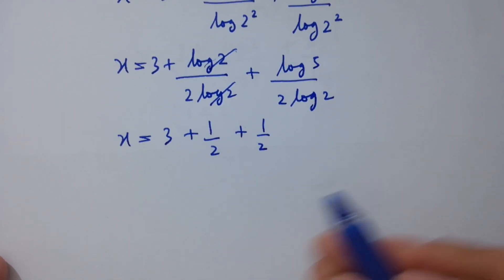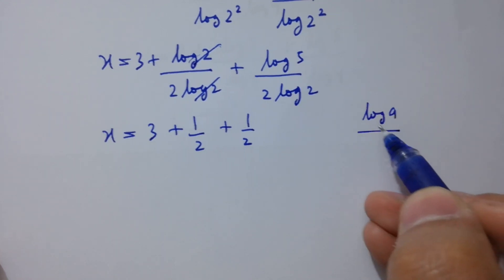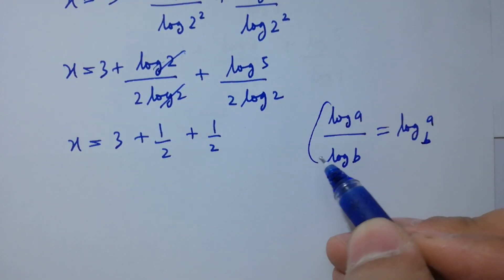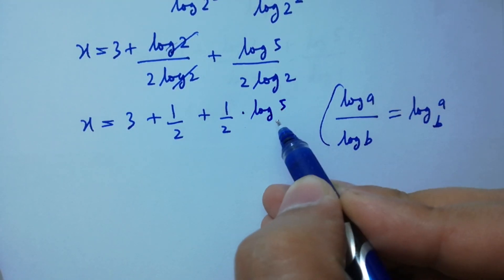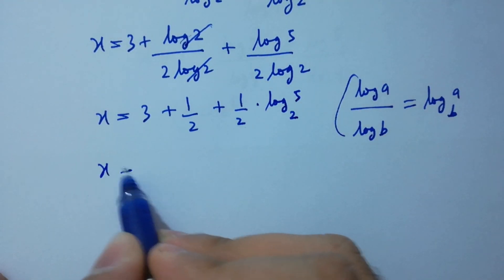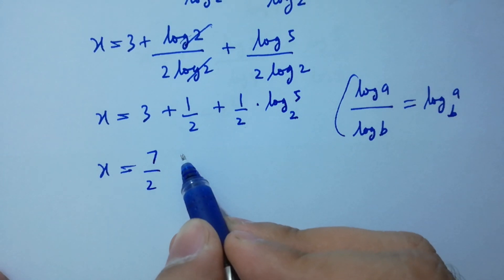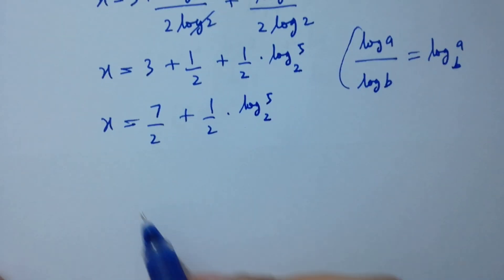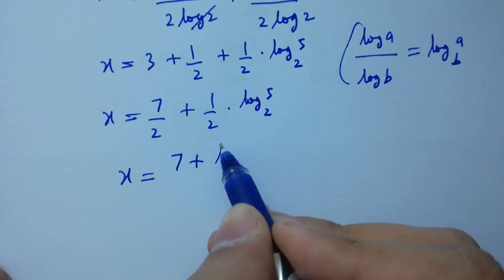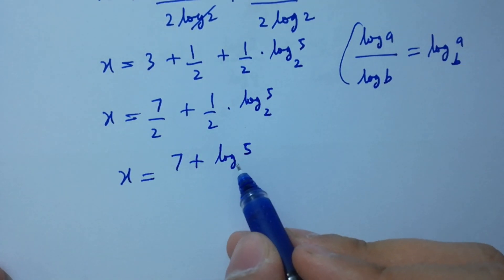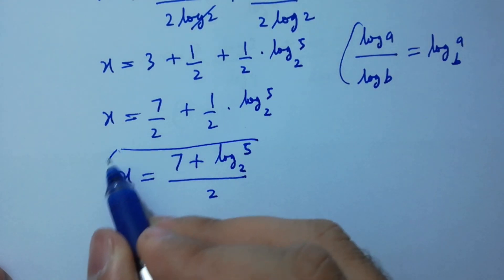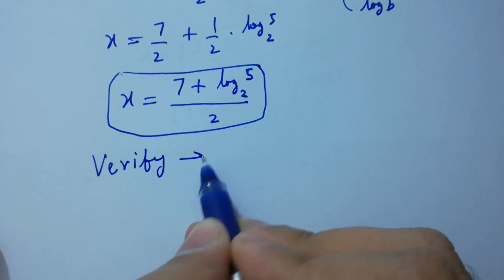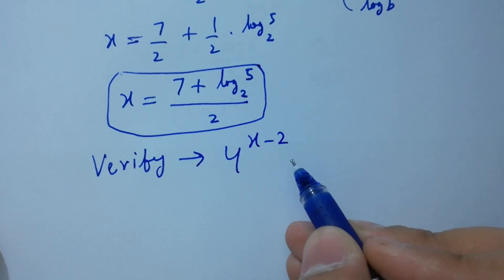So x equals 3 plus log 2 over 2 log 2 plus log 5 over 2 log 2. Log 2 and log 2 cancel in the first fraction, giving x equals 3 plus one half plus log 5 over 2 log 2. As log a over log b equals log a to the base b, this becomes x equals 7 over 2 plus one half log 5 to the base 2, or x equals (7 + log₅ base 2) over 2.